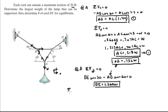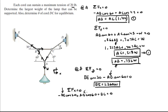Also at B, the sum of the forces in the X is equal to 0. So negative BE times the cosine of 30 plus AB times the cosine of 60 plus BC equals 0. We just found BE and we already know AB, so when you solve for BC you get that BC is equal to 0.732 times the weight.